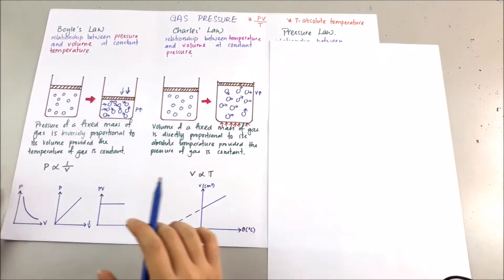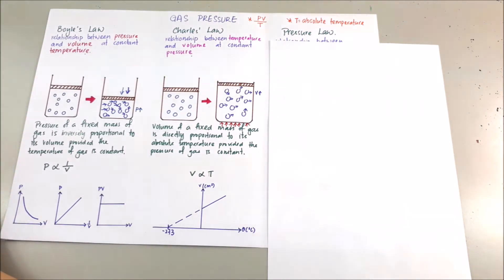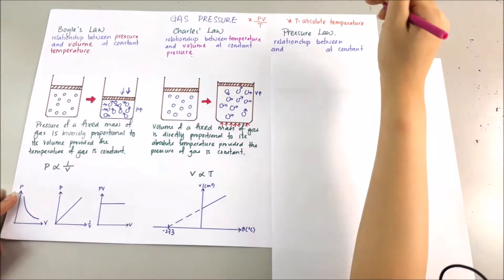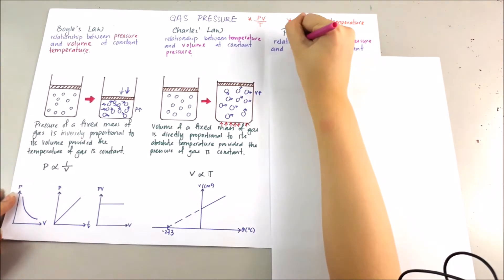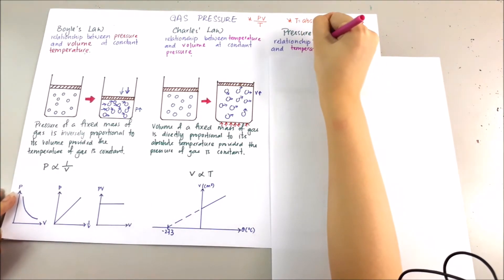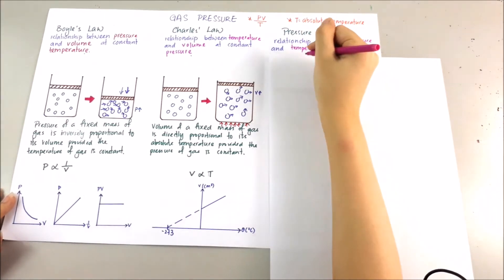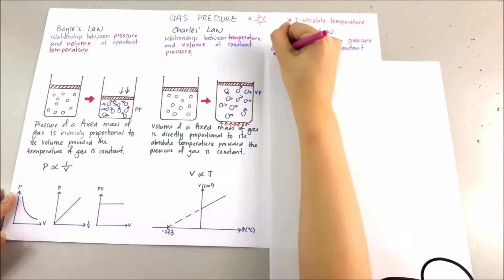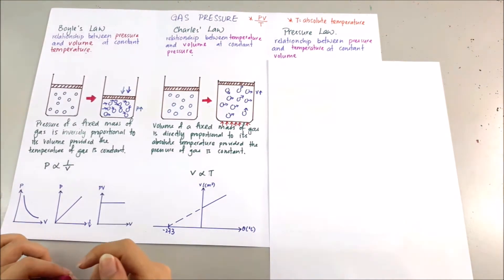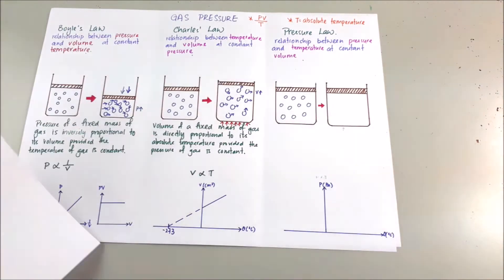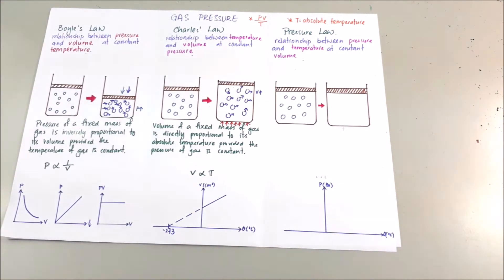The last one is the Pressure Law. The Pressure Law is the relationship between pressure and temperature at constant volume.